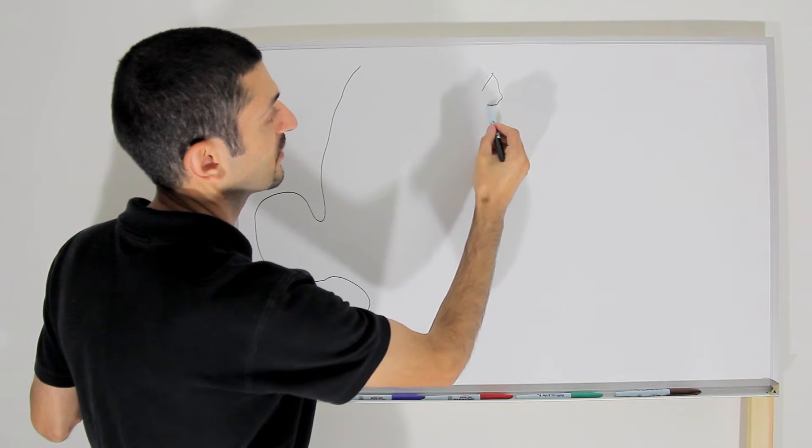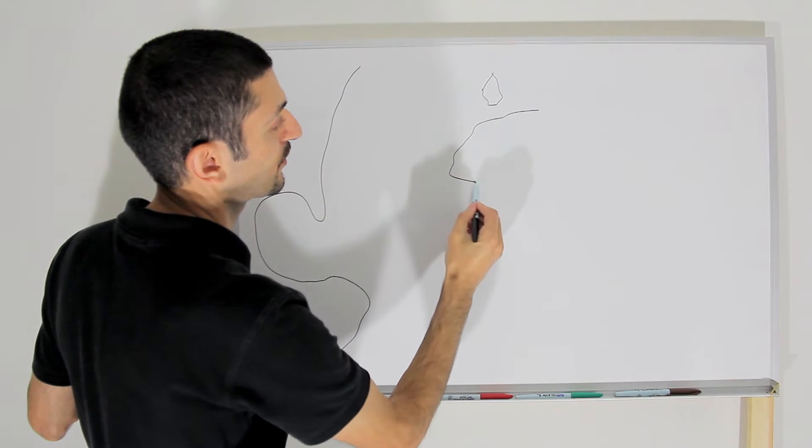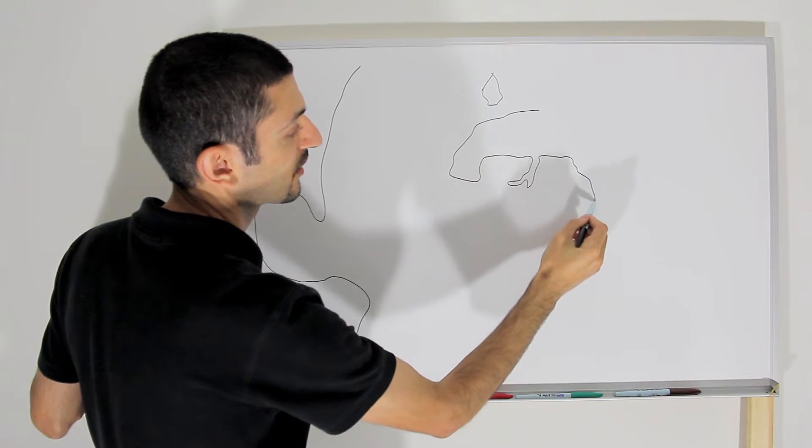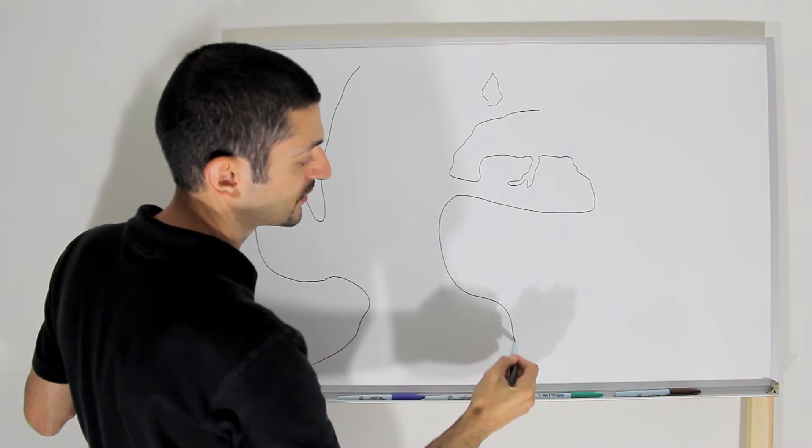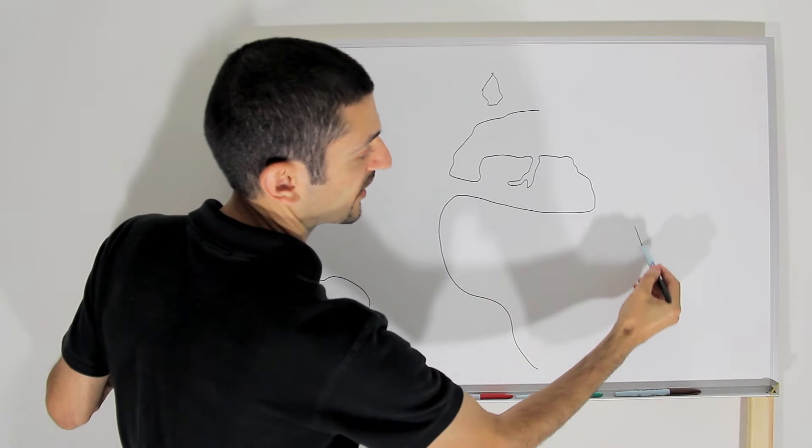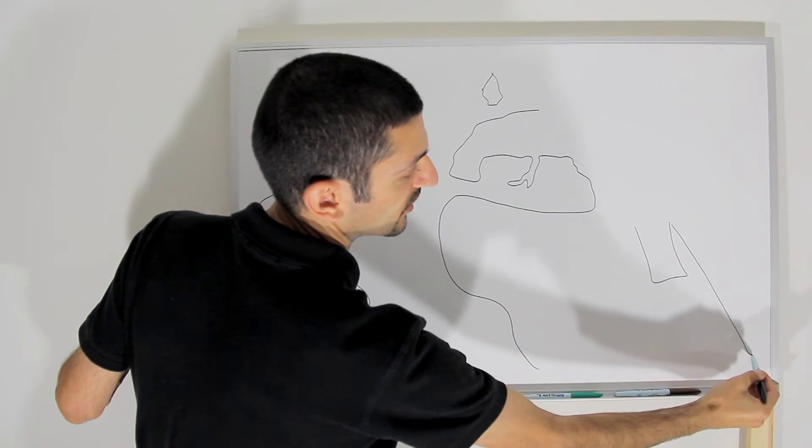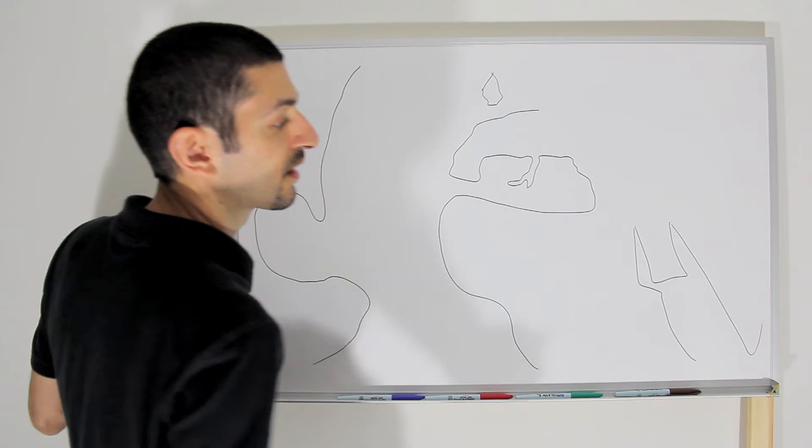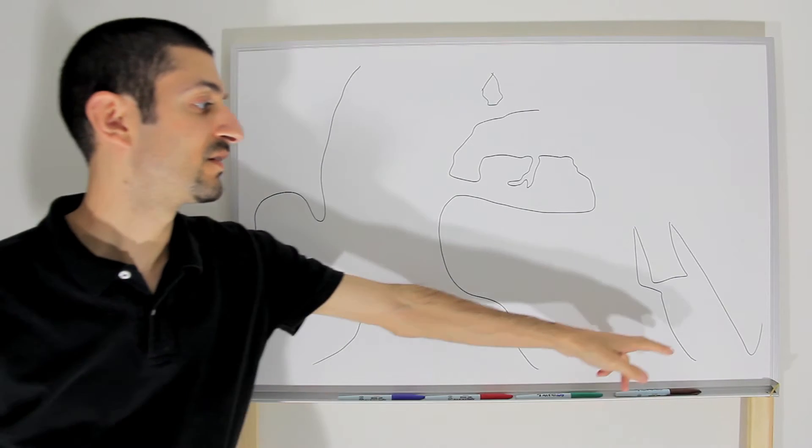Here we have England, Europe. Then we'll draw the Shoe of Italy, and then we have Africa. And then here you have the Middle East. And then you have the Indian subcontinent and the Indian Ocean.